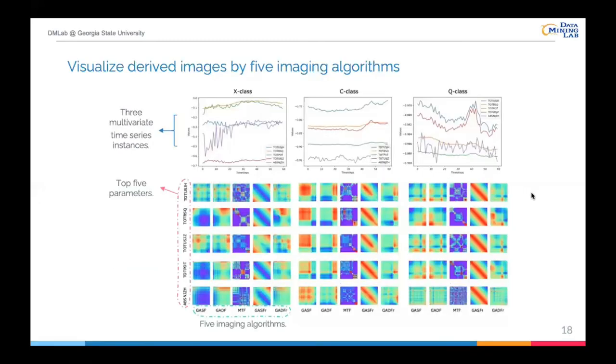Here are the visualization results of images derived by five imaging algorithms. There are three multivariate time series instances and top five selected parameters. Comparing the GASF and GASF-R, we can find GASF-R has a stronger linear tendency by multiplying the weighting matrix. However, the GADF-R doesn't have significant differences with the original GADF images. We will explore this finding in the future, but two conclusions can be safely inferred in our experiments. First, adding radial information into the construction of GASF and GADF is useful. At least, it can provide more information for the CNN-based model. Second, different imaging algorithms might need to apply different weighting matrices to obtain improvements.